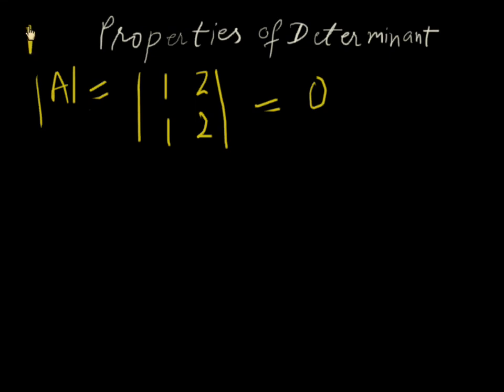This is first property. If any determinants, rows or columns will be equal then value of that determinant will be 0.